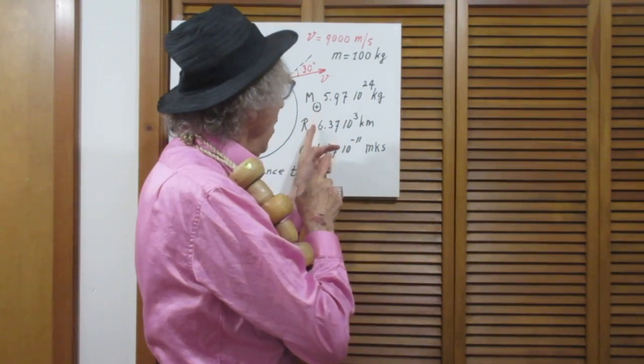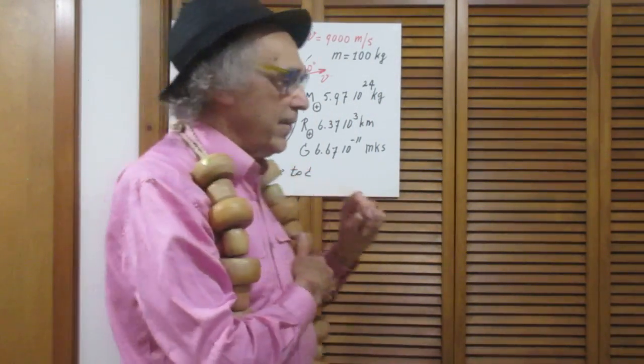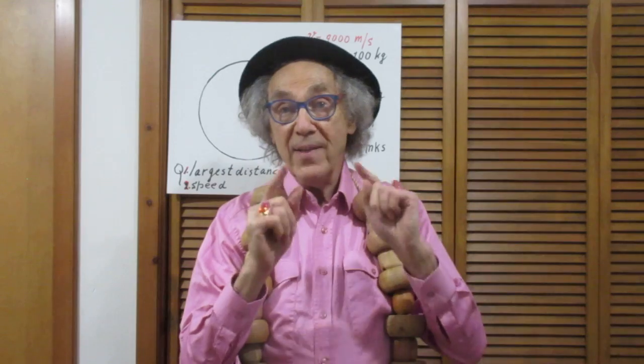If you use this M, R, G and you put in not 9000 meters per second, but 11.2 kilometers per second — to be more precise, 11.18 kilometers per second — that is the escape velocity from the surface of the earth. So that means the distance that the object then reaches must be infinitely large and the speed will then be zero. I suggest in your solution that you test it as a consistency check. If you put in 11.18 kilometers per second and you do not find that the distance becomes infinitely large and that the speed becomes really close to zero, then your solution is wrong.